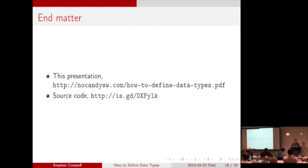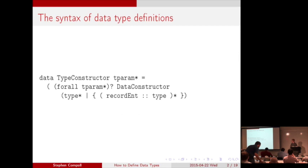How to define data types. You probably have seen a little bit of this at least, even if you are a beginning Haskell programmer. It's just basic Haskell 101. How do you define data types? You use the data keyword, or new type if you want to be fancy.